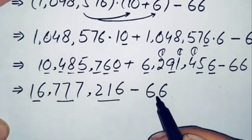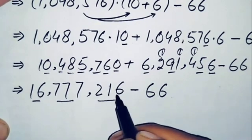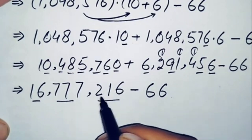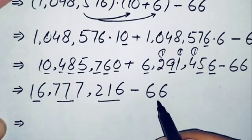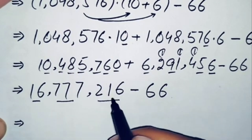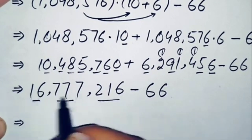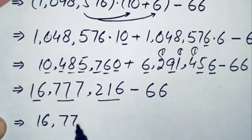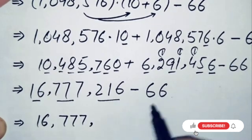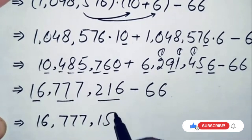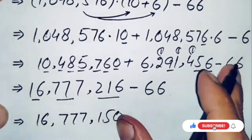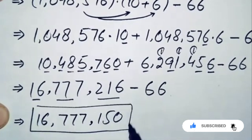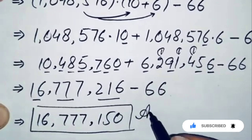Now finally we subtract 66 from 16,777,216. We subtract this two-digit number from the last three digits 216: 216 minus 66 gives 150. The other digits remain the same: 16,777. So finally the answer is 16 million seven hundred seventy-seven thousand one hundred and fifty.